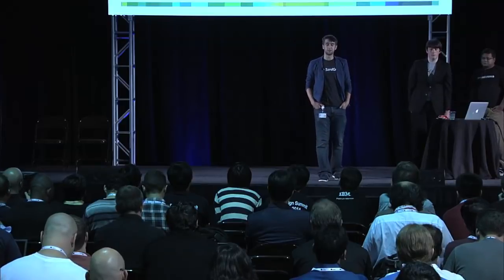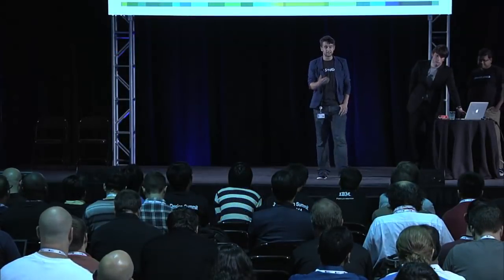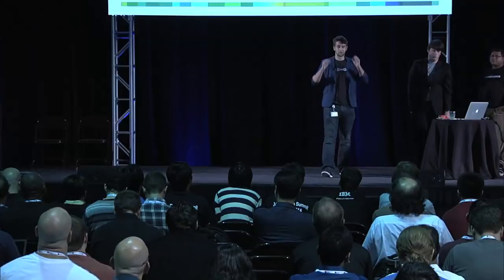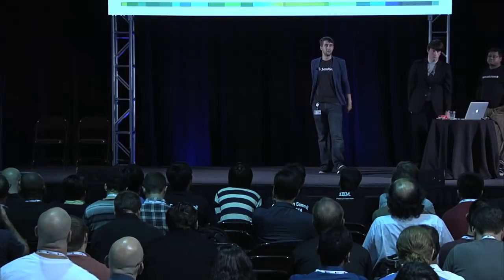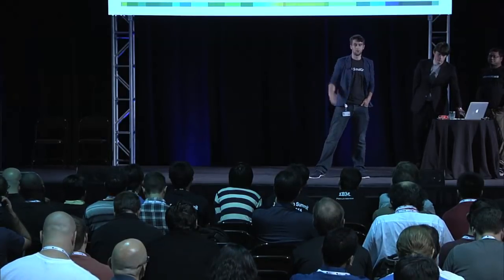The first use case is bottlenecks. Say you have a distributed application running across 10 different servers and it's not performing as it should. Currently you'd have to SSH into each VM and try to figure out what's going on. Instantly with AVOS, we can see that most of the application is running fine, but there are two particular hotspots of blazing red activity. Within two seconds, we've identified the most probable causes of the problem and can SSH into those specific VMs to figure out what's going on.